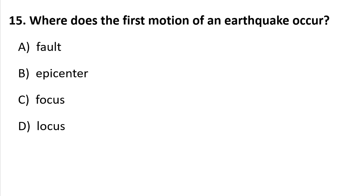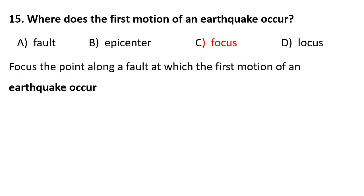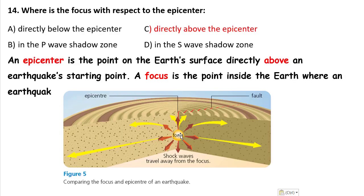Question 15: Where does the first motion of an earthquake occur? A) Fault, B) Epicenter, C) Focus, D) Locus. This is a straightforward question. The focus is the point along a fault at which the first motion of an earthquake starts. The epicenter is above the focus on the surface. So the answer is C — focus, the starting point of the earthquake.